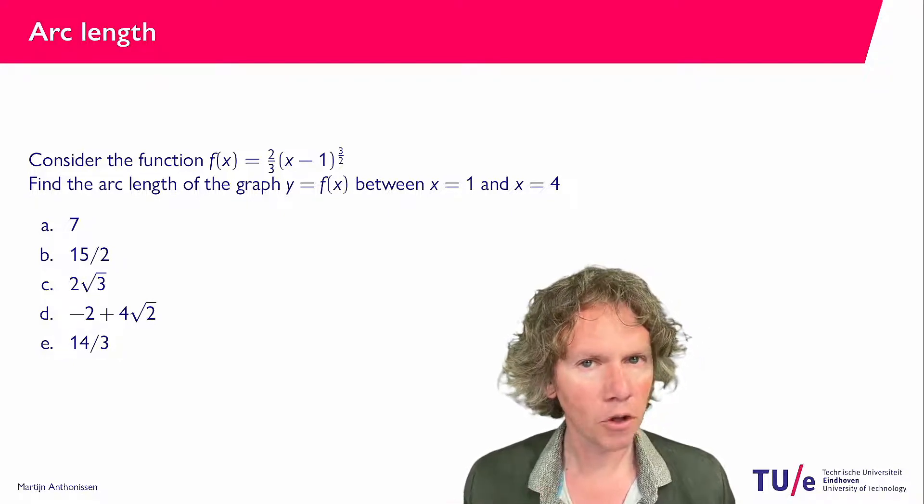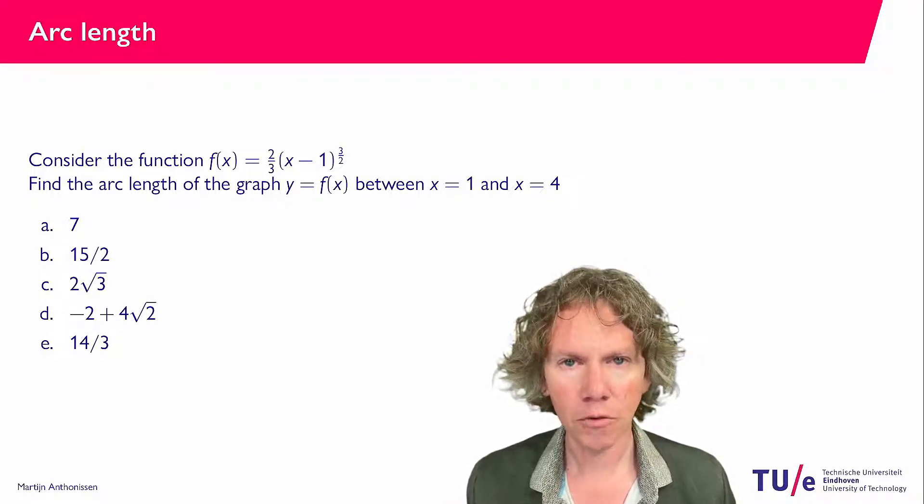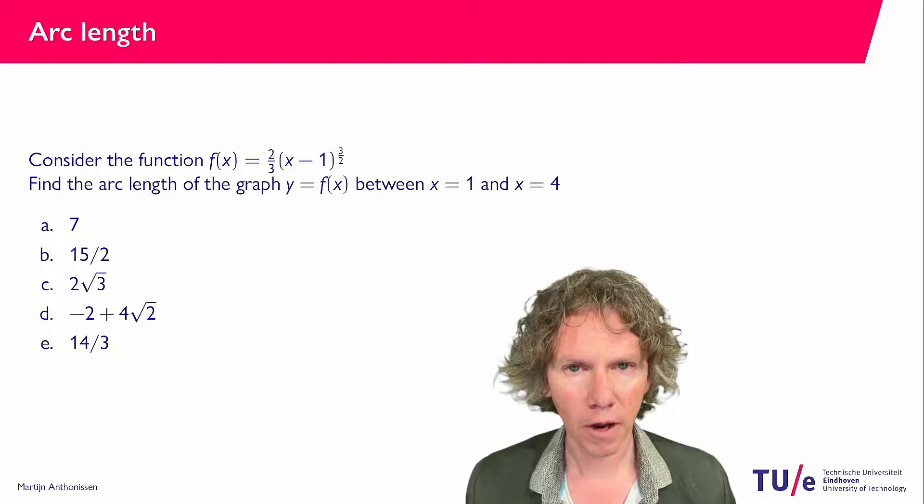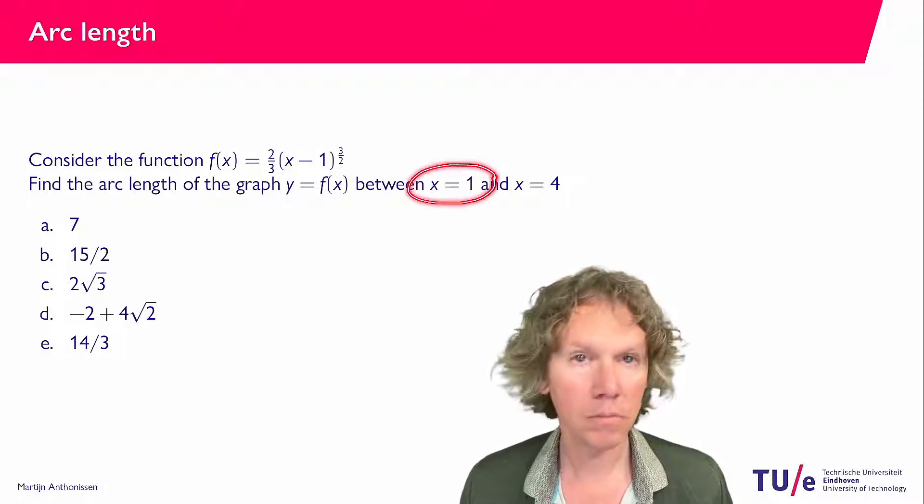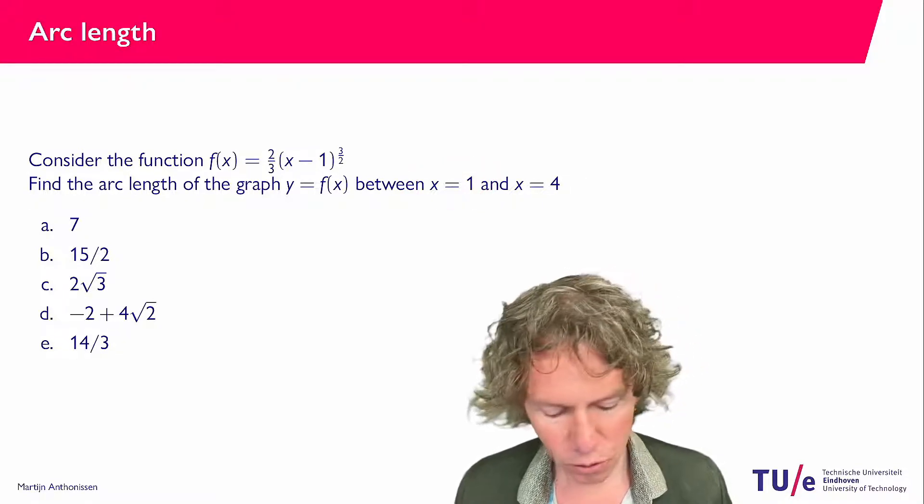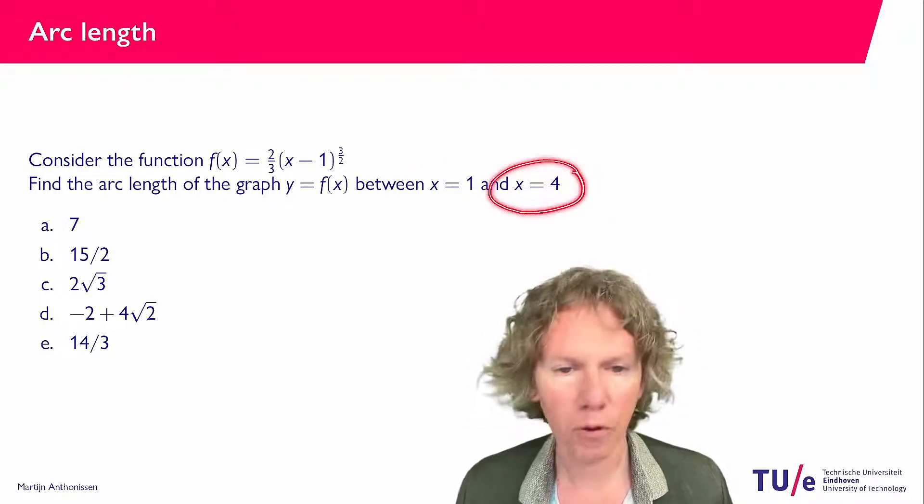So if you would plot the graph of the function and then you would walk along the graph, what is the distance you travel if you go from x equals 1 and then the point on the graph to x equals 4, the point on the graph.